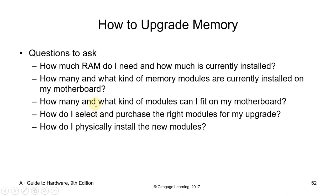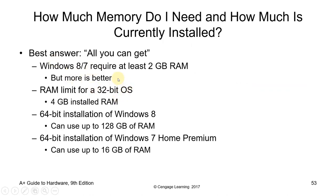How many and what kind of modules can fit onto my motherboard? Windows 8 or Windows 7 require at least 2 GB of RAM — but more is better. The RAM limit for a 32-bit OS is only 4 GB, which is why we are shifting to 64-bit, which allows up to 128 GB of RAM. A 64-bit installation of Windows 7 Home Premium can use up to 16 GB of RAM.